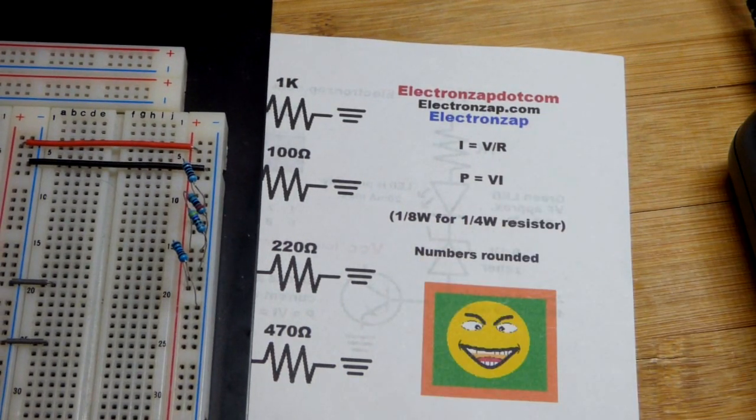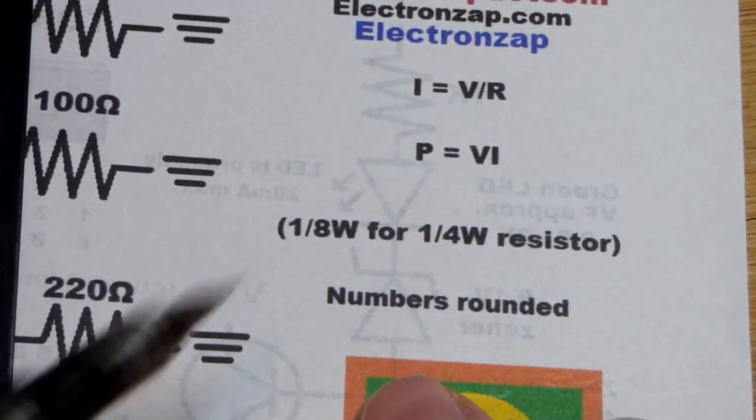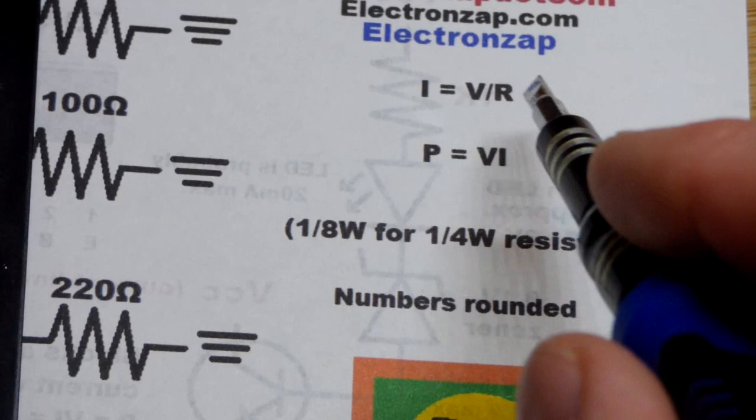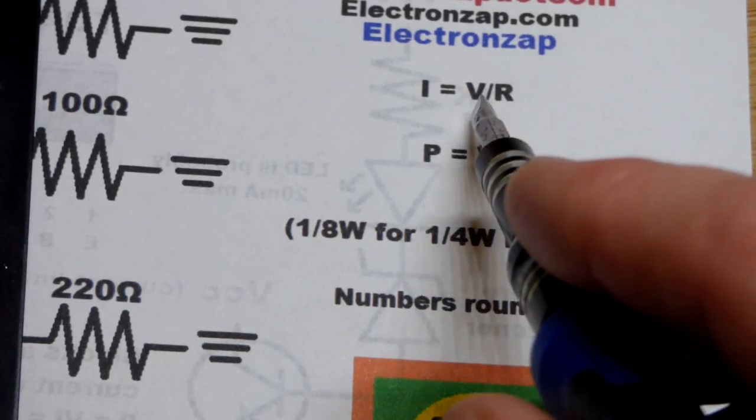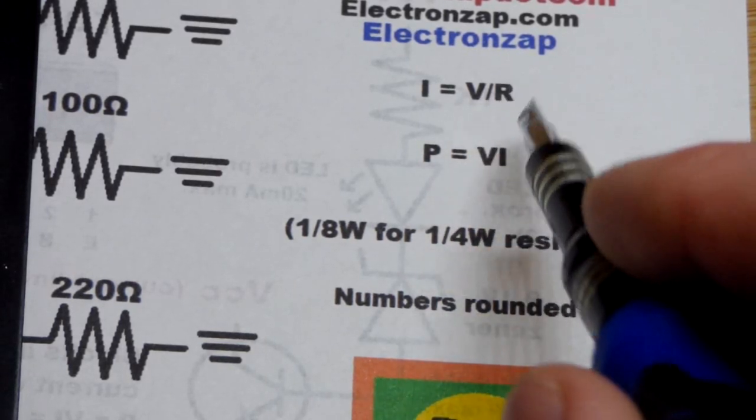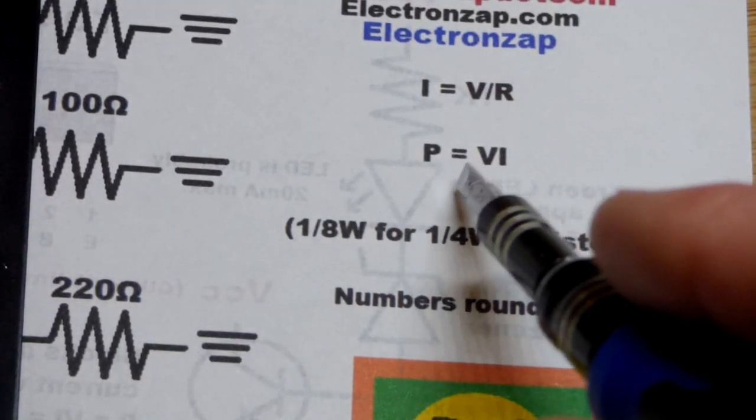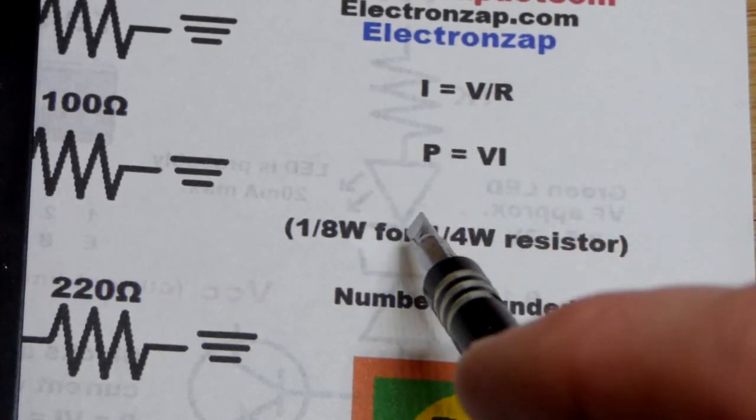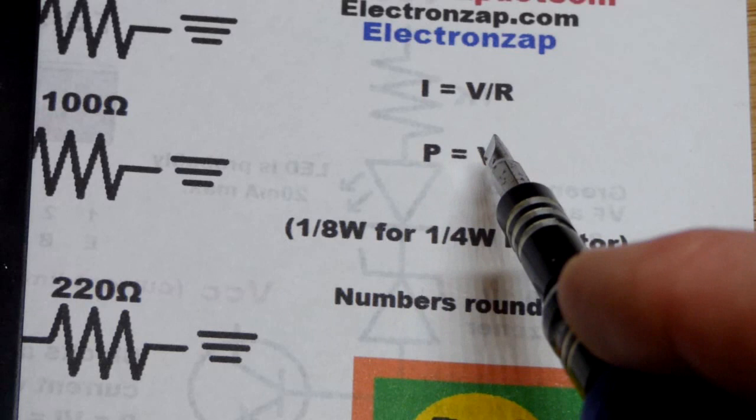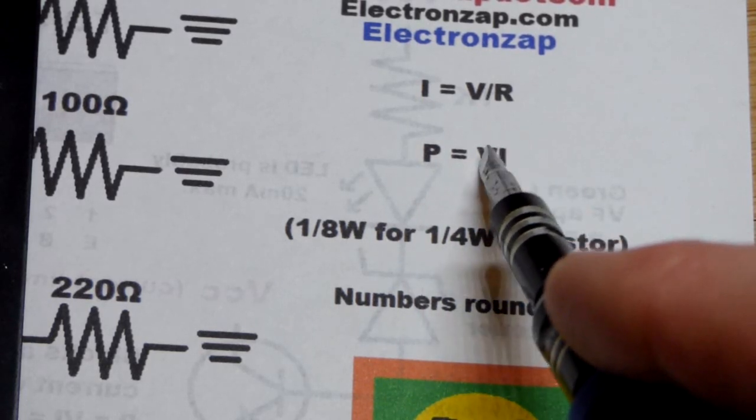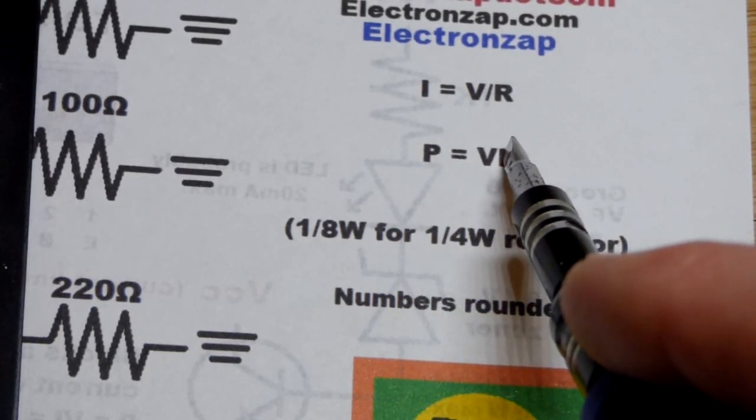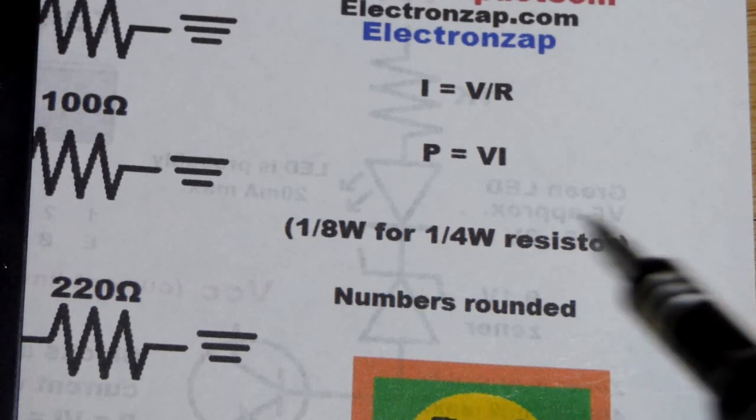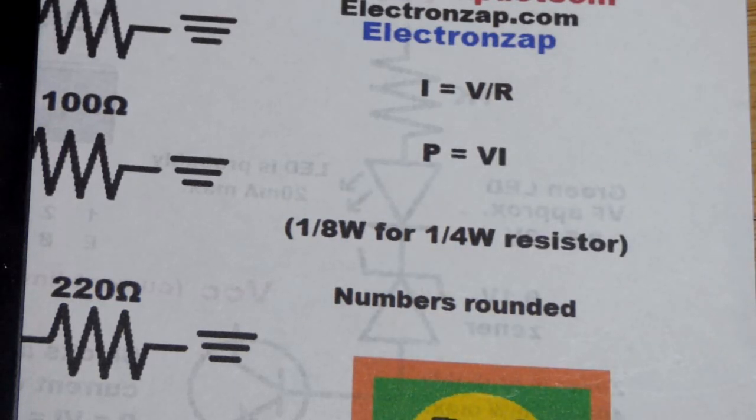They can dissipate a quarter watt of power. And so when it comes to current, the current in amps, I stands for current, that's a capital I, is voltage divided by resistance. So that's the voltage across the resistor divided by its resistance in ohms. Once we got the current, we can calculate the power. So the power is the voltage across the resistor, or any other component for that matter, times the current flowing through it in amps. Remember the current is always in amps when you're doing the mathematical formula like this.